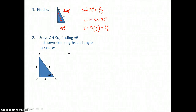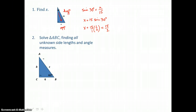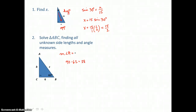In problem two, we solve triangle ABC — finding all unknown side lengths and angle measures. We know angle C = 90°, angle B = 62°, and side a = 6. We need side b, side c (the hypotenuse), and angle A. Since the angles sum to 180°, the two acute angles are complementary: angle A = 90° − 62° = 28°.